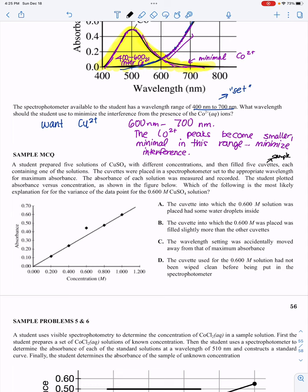Which of the following is the most likely explanation for the variance of the data point for the 0.6 molar copper sulfate solution? Here's the variance. At 0.6, it looks like it's supposed to be here, lower. That point's supposed to be lower in absorbance, but it's actually showing a higher absorbance than would be predicted. So which of the following explains a higher absorbance?